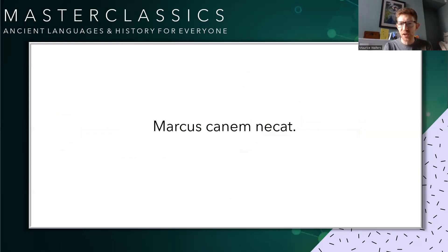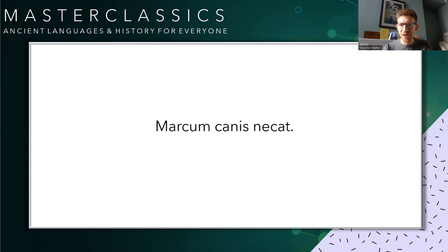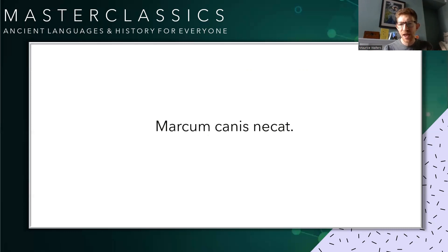So if we look at the sentence: Marcus canem necat. In Latin, because words can go in any kind of order, we might be confused and think — is that the dog killing Marcus, or is it Marcus killing the dog? Well, because of that M ending on canem, we know it's in the accusative. It can't be doing the action. So therefore it has to be: Marcus kills the dog. If we wanted it the other way around, we'd have to change the ending of Marcus to Marcum — Marcum canis necat. Look at how those two sentences have the word order exactly the same, but just a subtle change in the ending which completely changes the meaning.